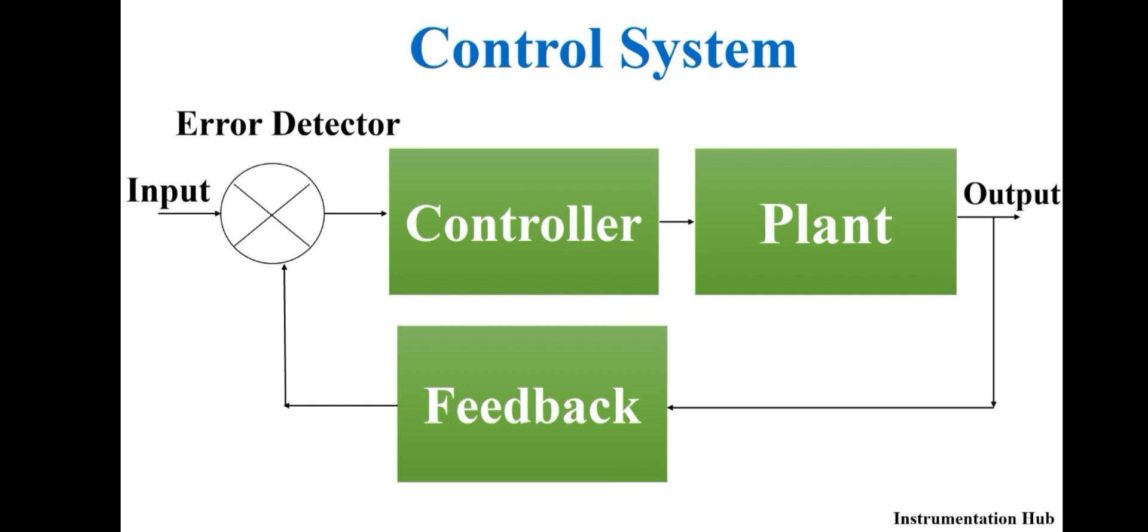Major components that are used in the control system are input, error detector, controller, plant or process, feedback, and output. Control system is basically used to control a specific physical parameter at a given set point or as per a given set point.